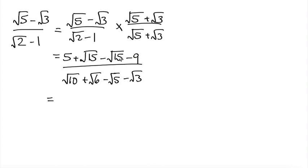So 5 minus 9 is minus 4. The root 15 minus root 15 cancel each other out.